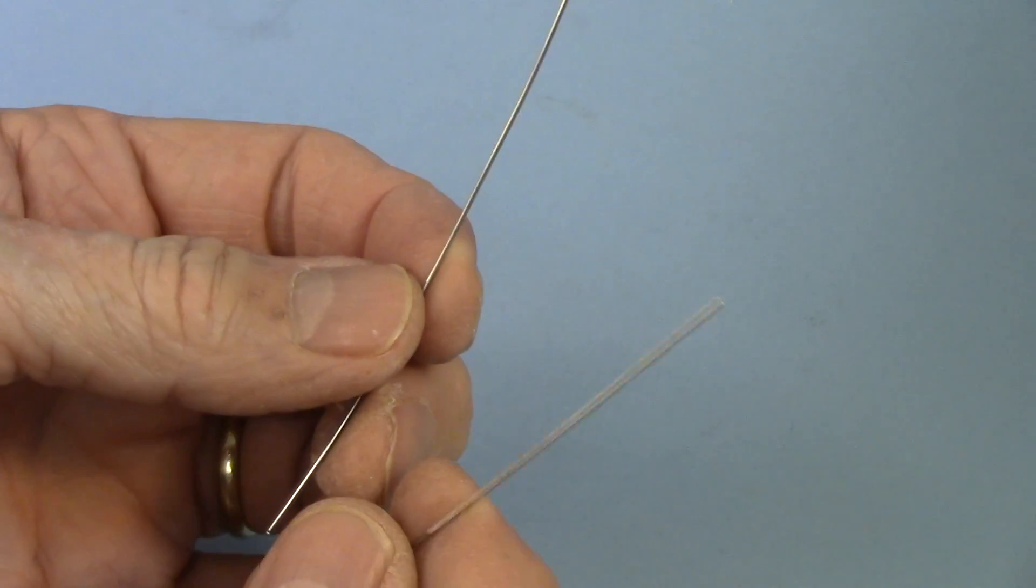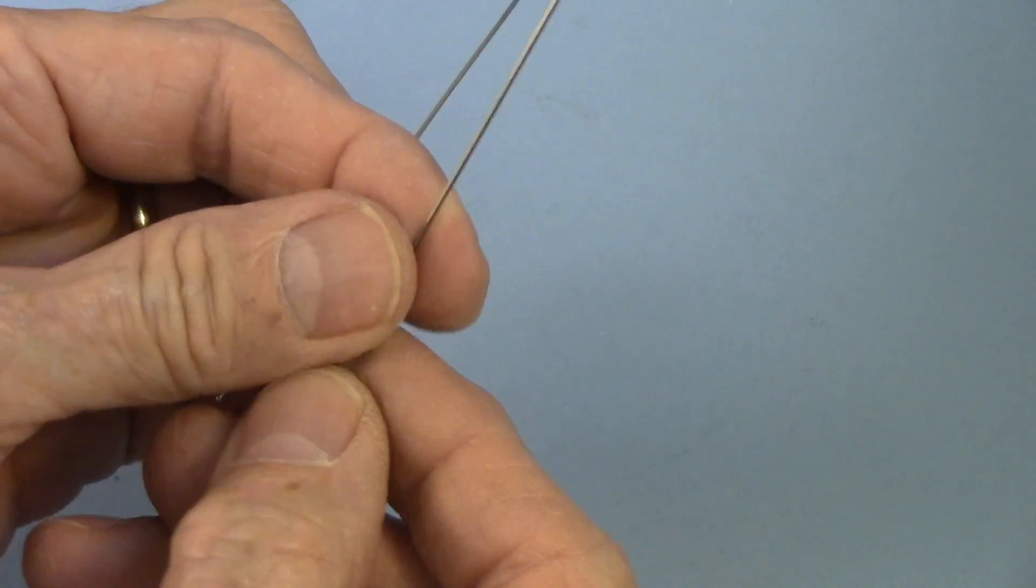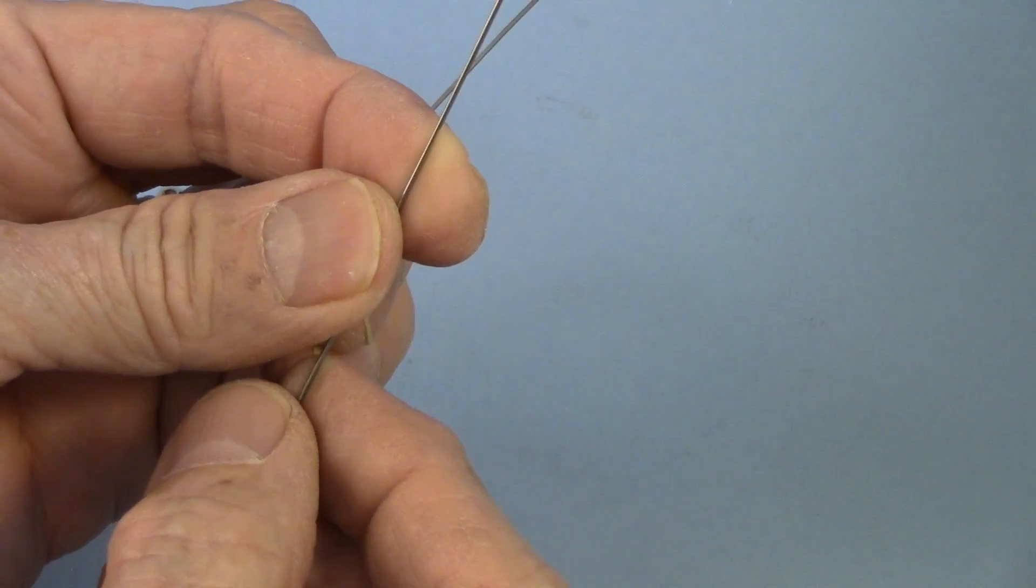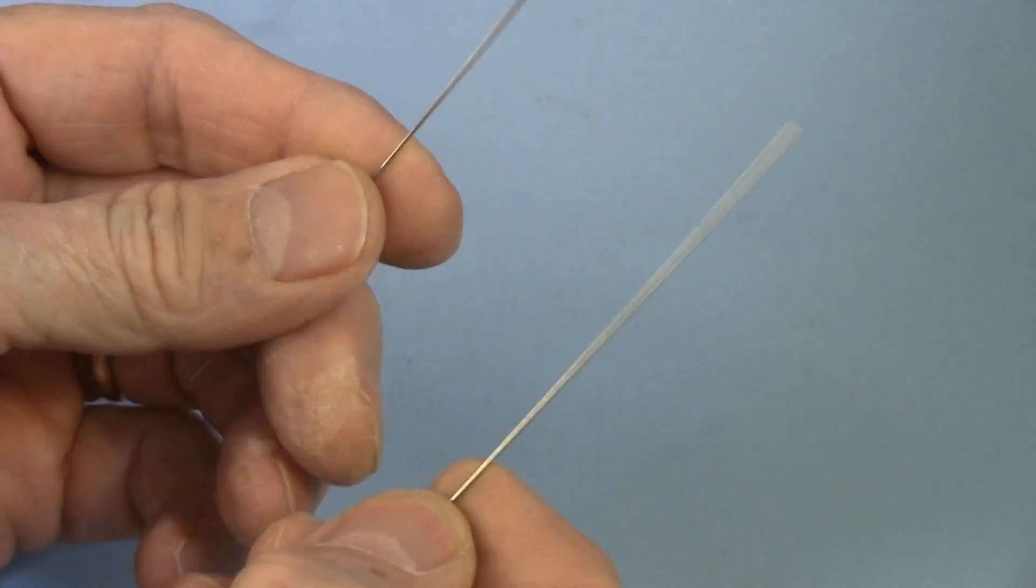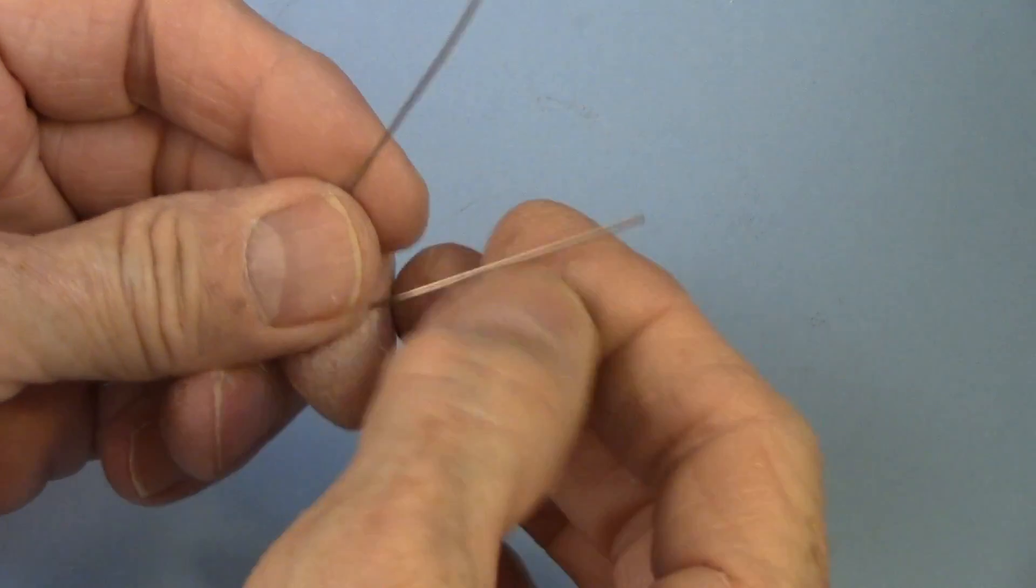Now, the cobalt alloy wires are more expensive, so I use the nickel-chromium when I can, but a lot of applications you really want to use the cobalt alloy wire. Now, here's the difference between the two.